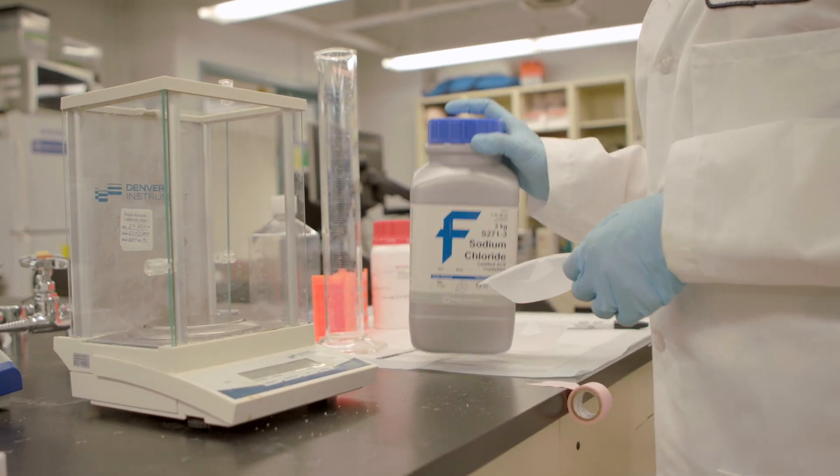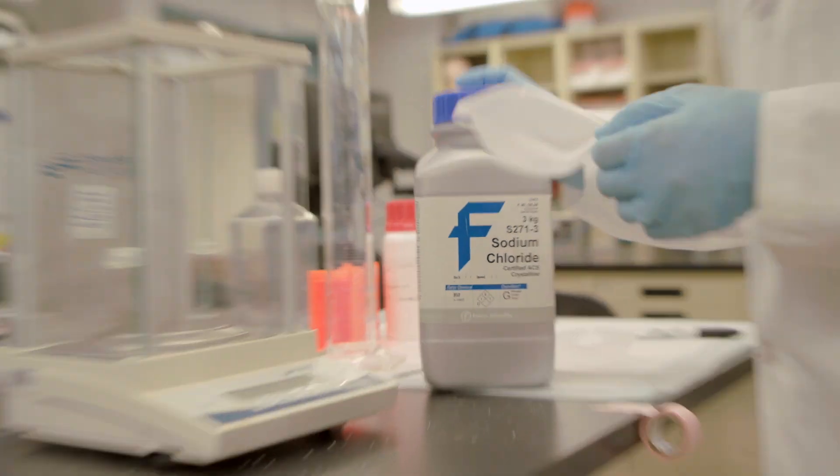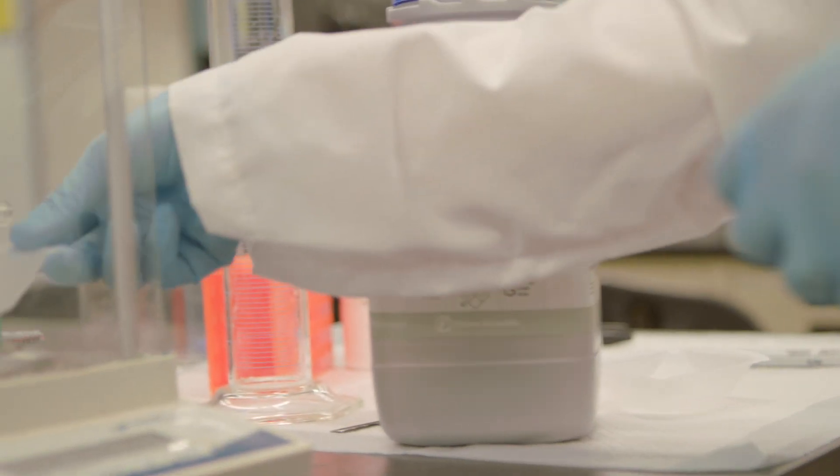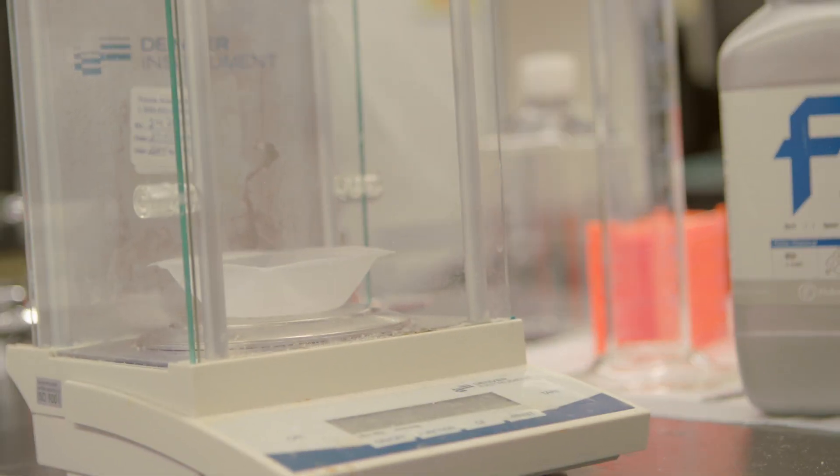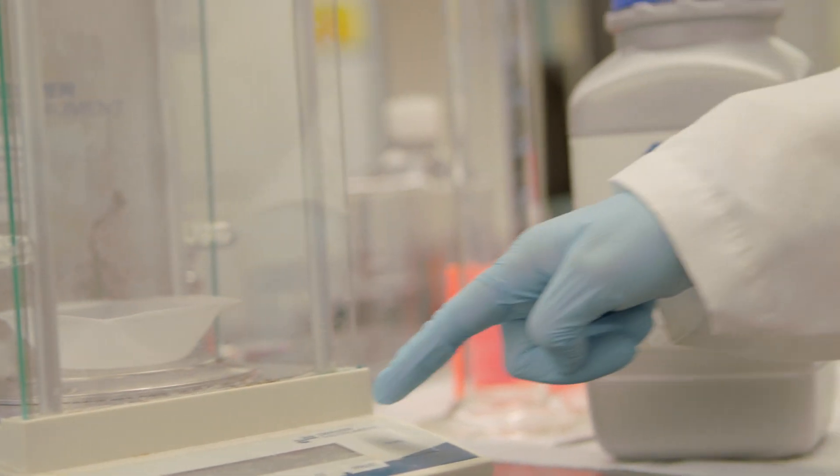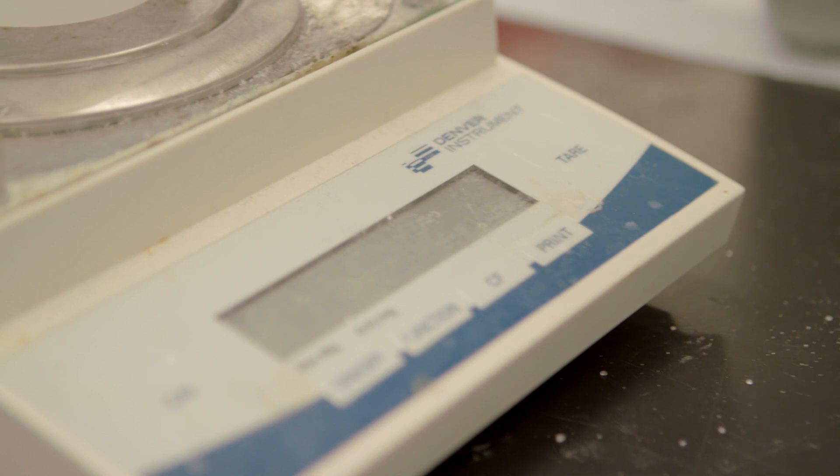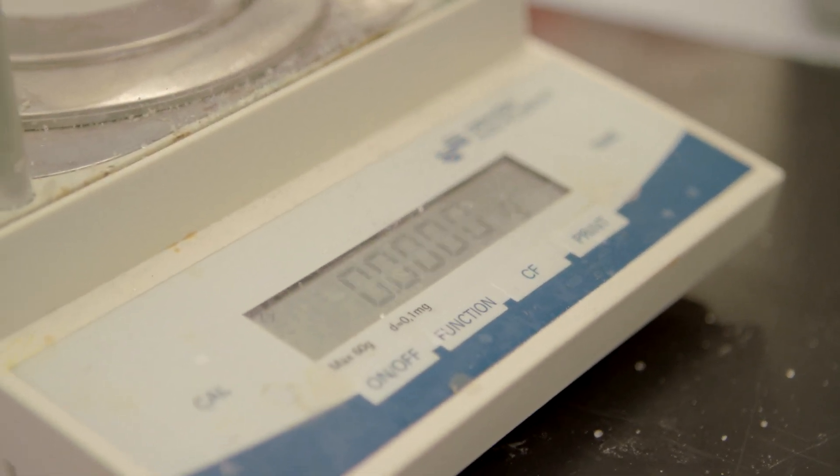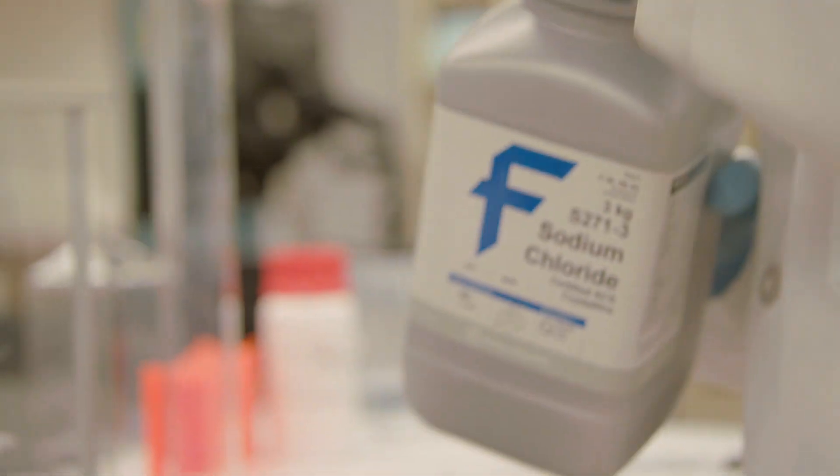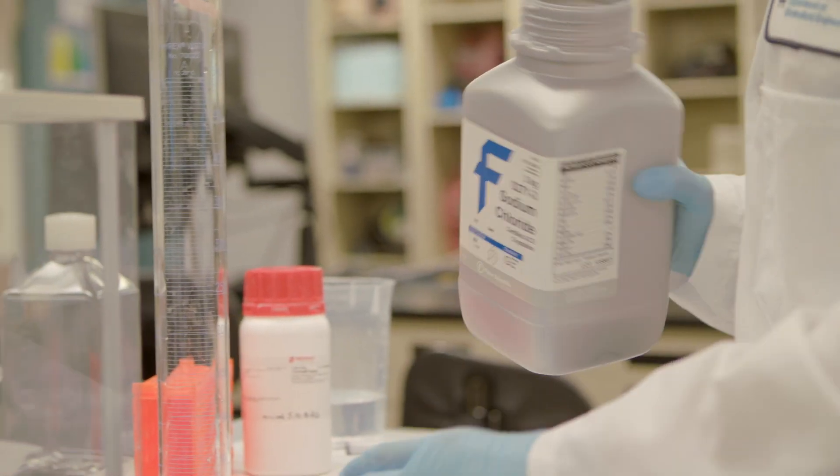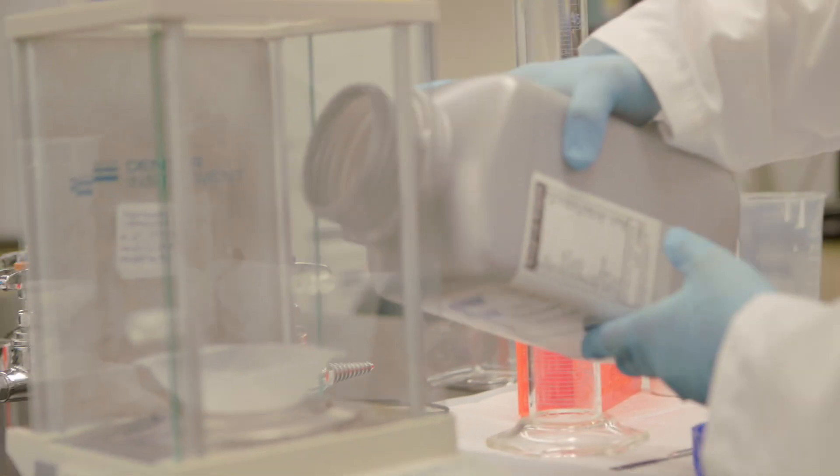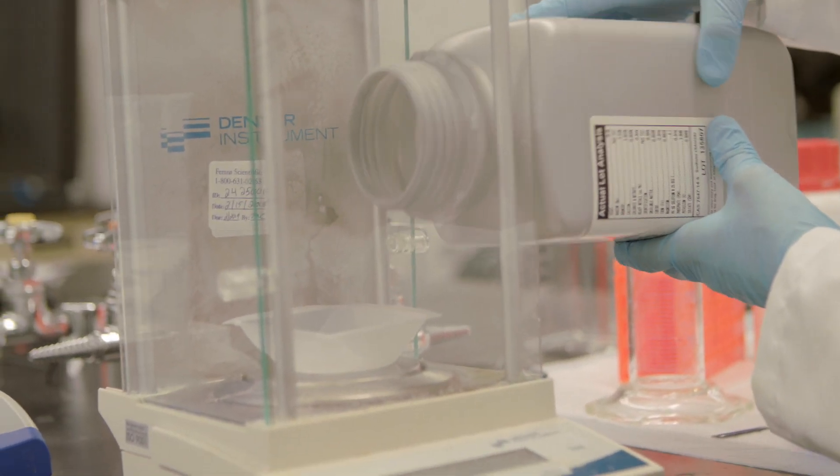Now, moving on to the NaCl, I take a clean weigh boat. Again, place it on my scale and hit tare again. This time I want 45 grams of NaCl. This is kind of a big container, so we'll see if I can pour carefully into here. No, I can't.